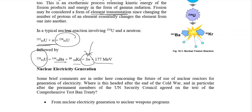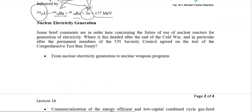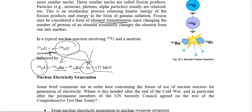Those neutrons are now available for further reaction — what we call a chain reaction. These neutrons will further react with available uranium, further destabilizing it and causing it to split, releasing more energy. Even these neutrons will react with the fission products, releasing further amounts of energy.